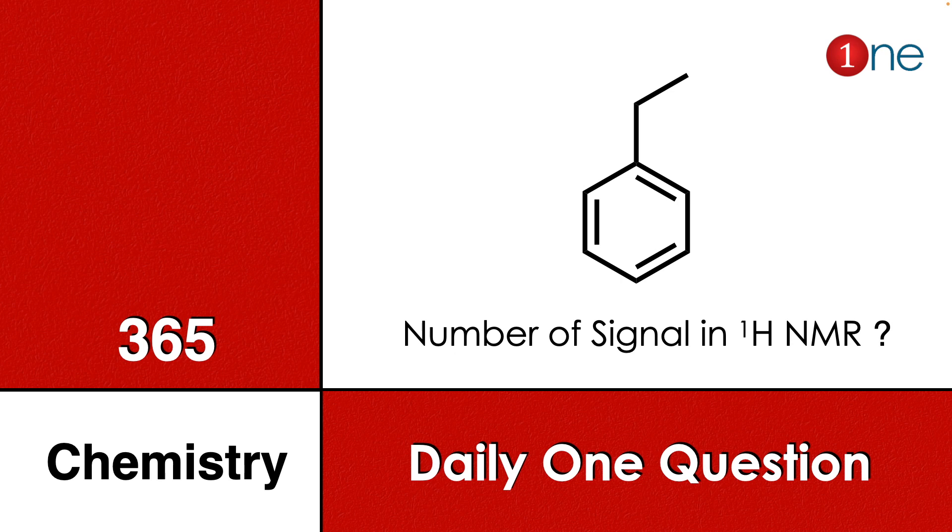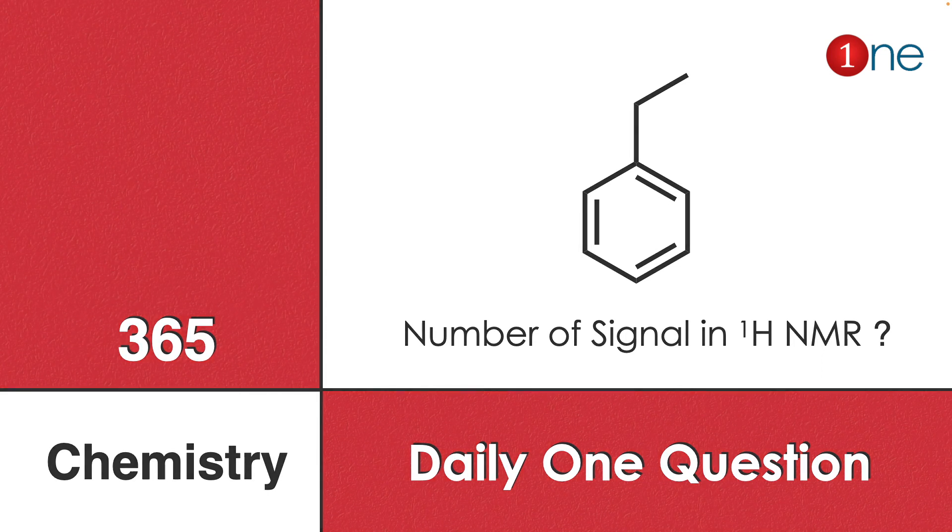Welcome to One Chemistry. This is the 365 Chemistry series, a daily question for you. Here, ethyl benzene is given. You have to find the number of signals it can produce in the proton NMR.